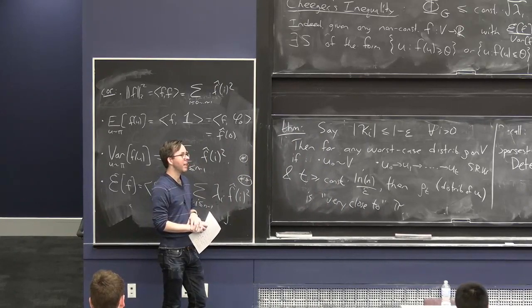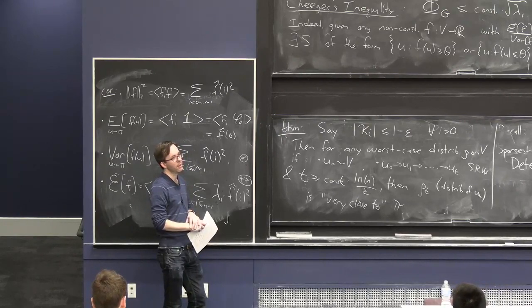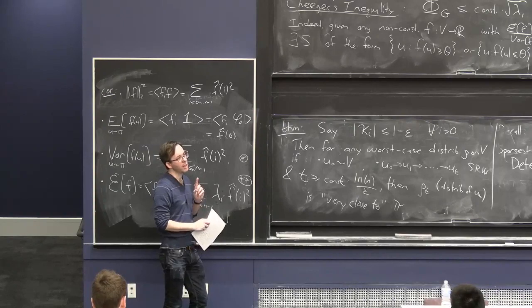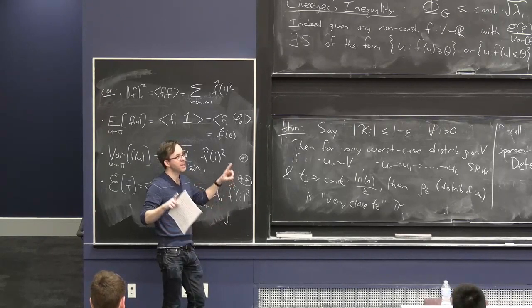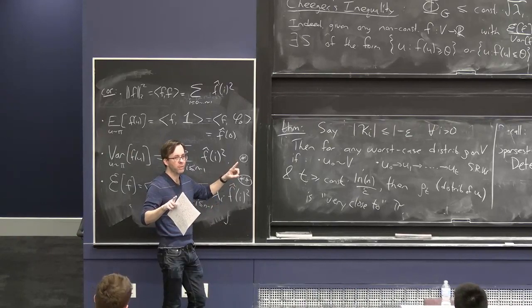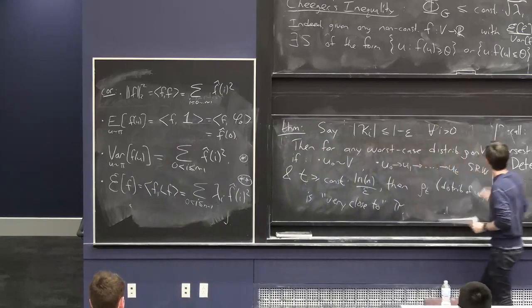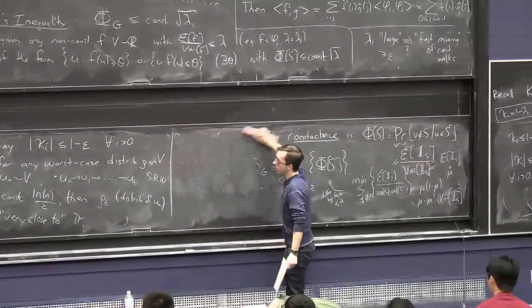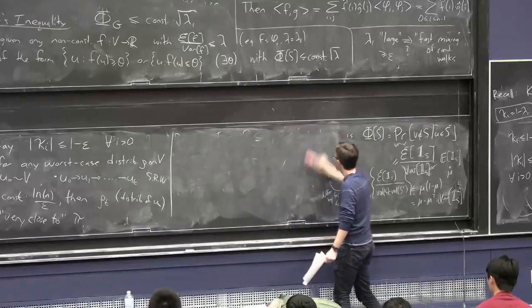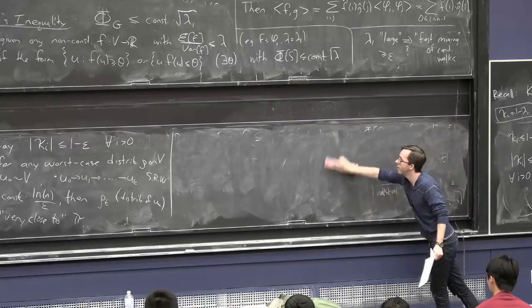It's interesting because in a degree-3 regular graph with n vertices, the diameter can't be too small, but this random walk mixes quite fast — you just need order log(n) steps and you're close to the uniform distribution.